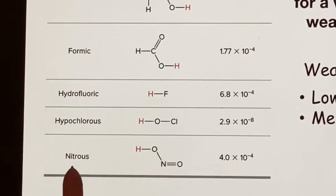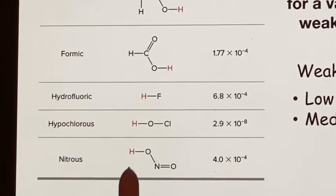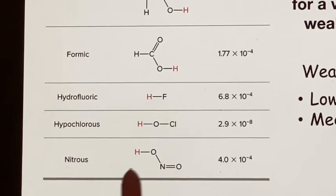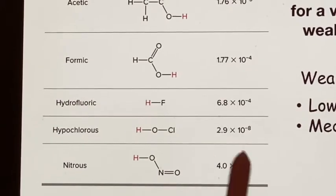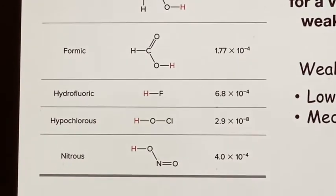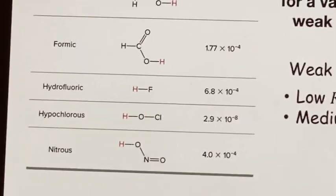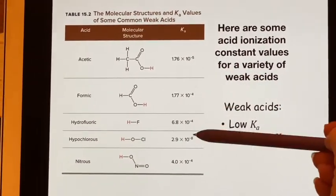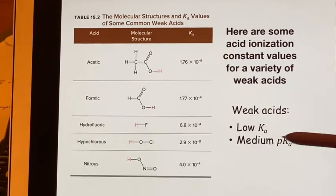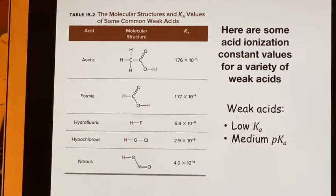And nitrous acid, as opposed to nitric acid. Nitric acid had three oxygens. Nitrous has only two oxygens. And it turns out that it is a weak acid. And the weak acids have low numbers for their Ka values. Look at them. They all have these 10 to the minus something, right? And their pKa values tend to be a middling size.